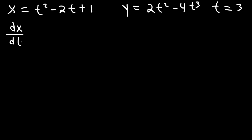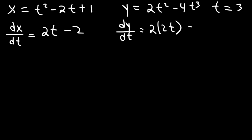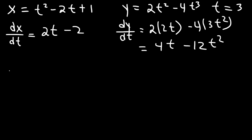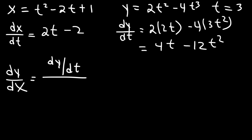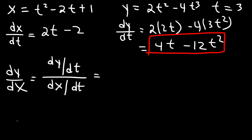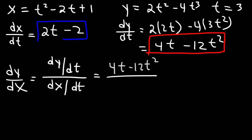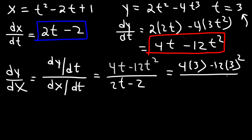I'm going to start with dx/dt. The derivative of t squared is 2t, and the derivative of negative 2t is negative 2. For dy/dt: the derivative of t squared is 2t, and for t cubed it's 3t squared. So dy/dt is going to be 4t minus 12t squared. So dy/dx is going to be dy/dt divided by dx/dt, that's 4t minus 12t squared divided by 2t minus 2. To find the slope, we just need to plug in 3: so it's 4 times 3 minus 12 times 3 squared divided by 2 times 3 minus 2.